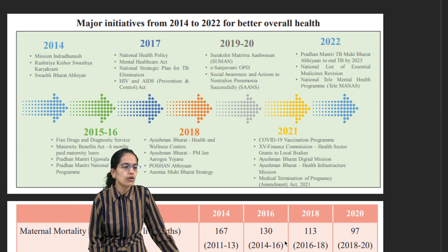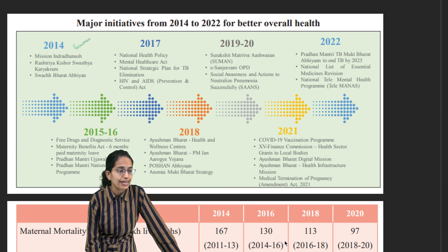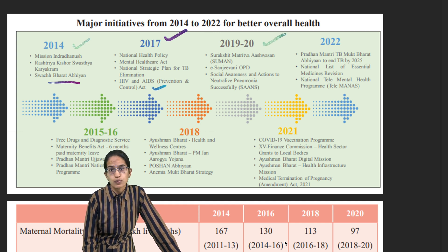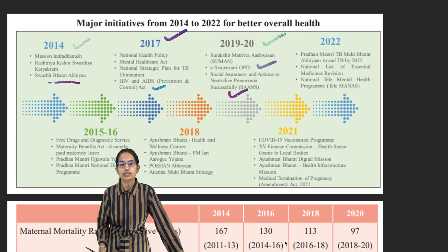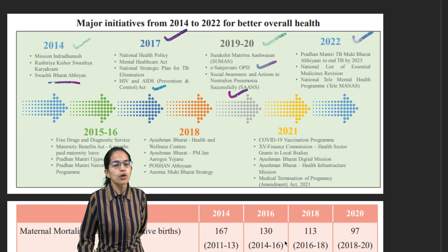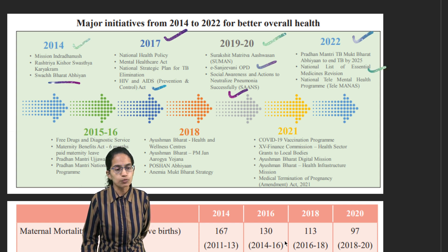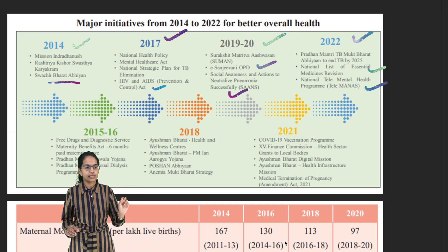For health, in 2014 Mission Indra Dhanush was launched for vaccination. The Swachh Bharat Abhiyan started in 2017. The National Health Policy and the Act for AIDS and TB elimination were brought in. In 2020, the eSanjeevni OPD portal was released, and the Social Awareness Action to Neutralize Pneumonia Successfully initiative was launched.